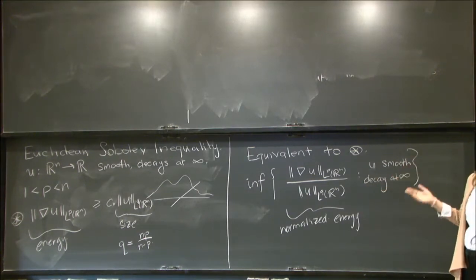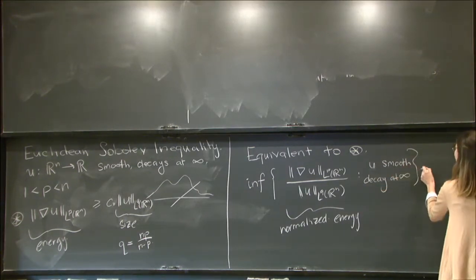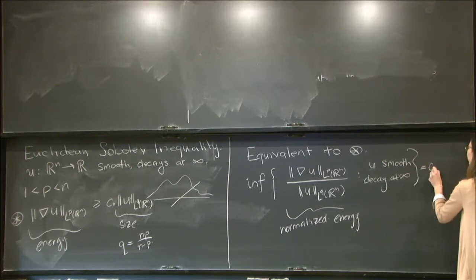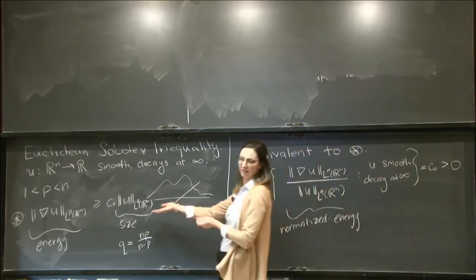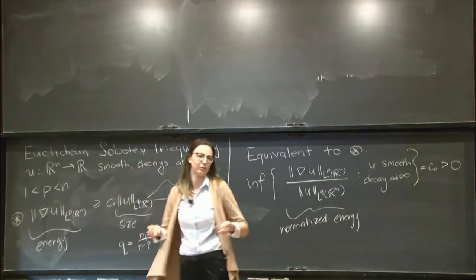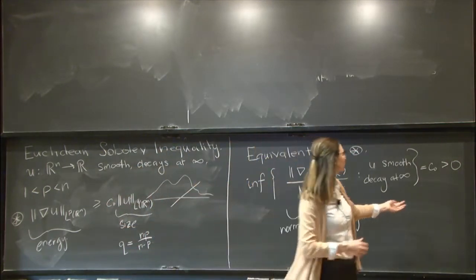And I want to minimize this among all functions which are smooth and that decay at infinity. So I'm minimizing some number, so this infimum is tautologically just equal to some constant. And what the meat of the Sobolev inequality says is this constant is positive. This infimum value is something positive, therefore this inequality says something, which it would not if this constant were equal to 0.